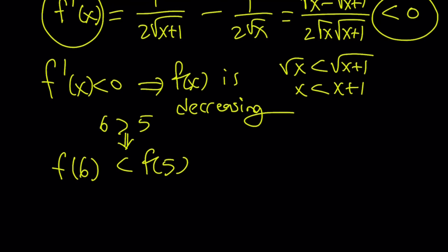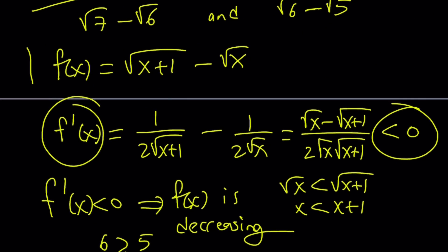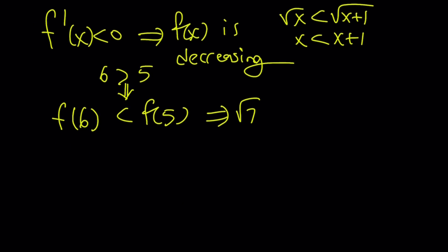So, this implies that what is f of 6? f of x is defined this way so f of 6 is going to be root 7 minus root 6 and it is less than root 6 minus root 5. Again, this becomes the larger number. Of course, it should be consistent, right?